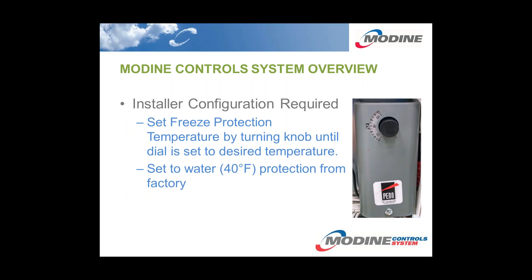The only installer configuration required, other than connecting the wires, is to set the freeze protection. There is a picture of our freeze protection controller — we've been using this for a number of years on our school products. It's a very durable, accurate, and robust controller. It is set to water protection from the factory, which is 40 degrees F, and that can be adjusted in the field by simply rotating the black knob until the dial reaches the desired position for the percent and type of antifreeze in the ground loop.